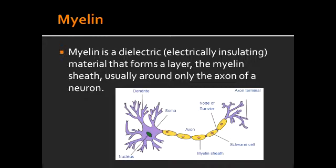What is the function of myelin? Myelin increases the conduction velocity of signals transmitted down the axon. This results in saltatory conduction of action potentials between nodes of Ranvier, where there is a high concentration of sodium channels.